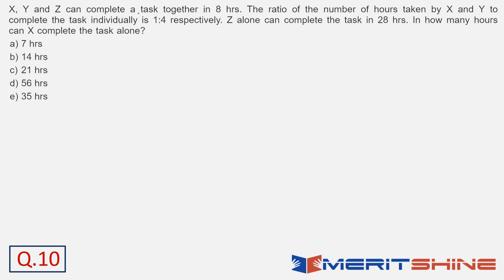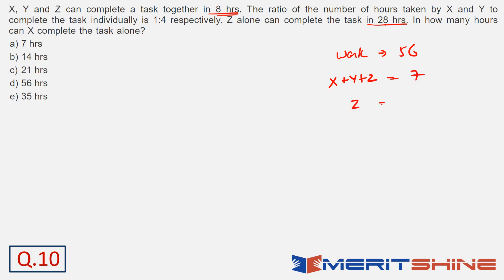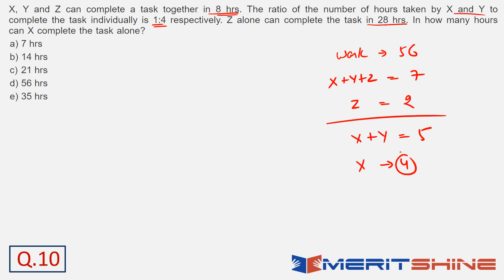Question number 10. X, Y, Z do the work together in 8 hours. Z alone does it in 28 hours. Take LCM as 56 — that is the total work in units. X plus Y plus Z efficiency equals 56 by 8, that is 7. Z's efficiency is 56 by 28, that is 2. So efficiency of X plus Y equals 7 minus 2, that is 5. Time taken by X and Y is in ratio 1 to 4, so efficiency ratio is 4 to 1. X's efficiency is 4. Answer is 56 divided by 4 — option B, that is 14 hours.